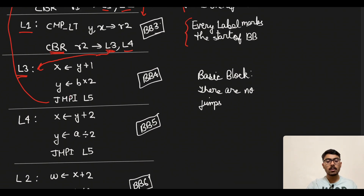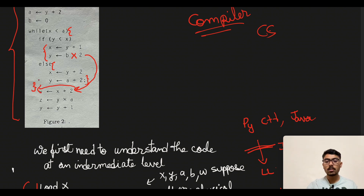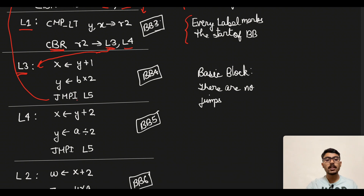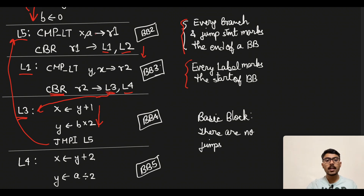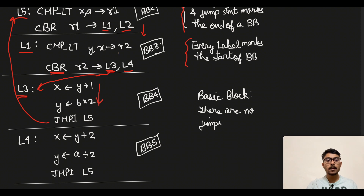I made a mistake earlier — the while loop actually closes here. So once y gets the value b multiplied by 2, we go back to L5 to re-check the while condition. Once the while iteration is completed we go back and check if x is less than a. So after executing the two lines in BB4, we jump immediate to L5, and at L5 we compare x and a into r1, just as we did previously.